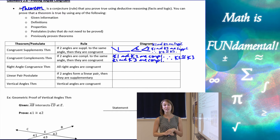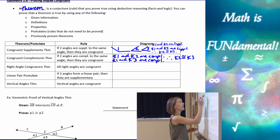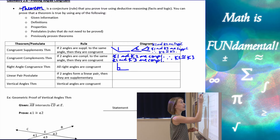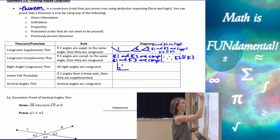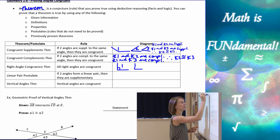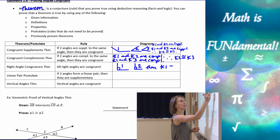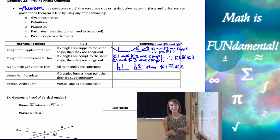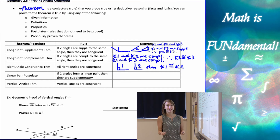Moving along, we have the Right Angle Congruence Theorem, which simply states that all right angles are congruent. If I know that I have a right angle — let's call it angle one — and I have another right angle, angle two, then I can state that angle one is congruent to angle two because all right angles measure 90 degrees, and if they have the same measure, they're congruent.